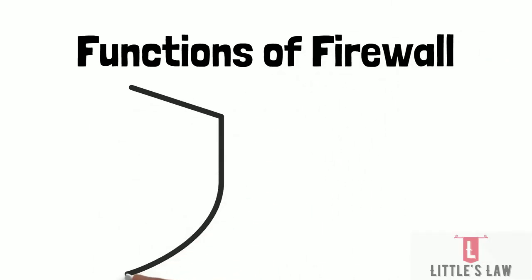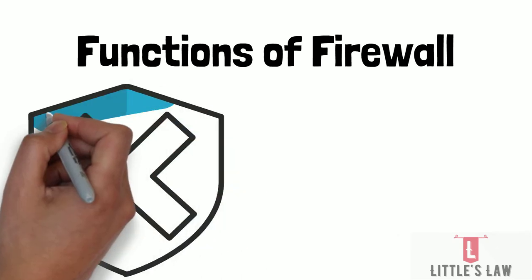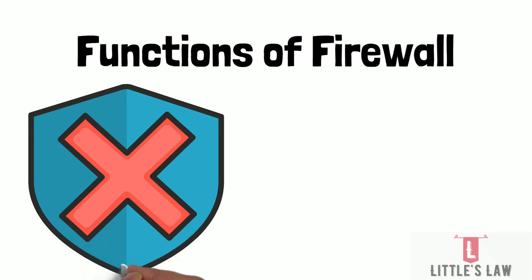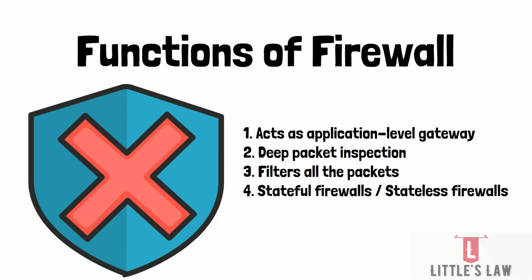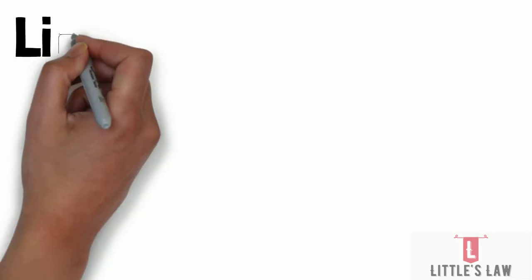Now let's see the functions of a firewall. A firewall acts as an application-level gateway, carries out deep packet inspection, and packet filtering is its primary function. It also carries out management functions. Stateful firewalls are dynamic and differ from stateless firewalls. Factors such as risk profile, vulnerabilities, the criticality of the organization's operational area, and necessary resources all decide the complexity level of the firewall.